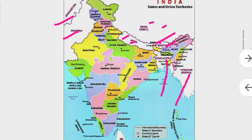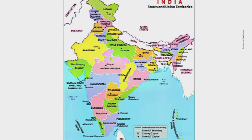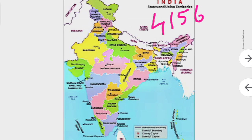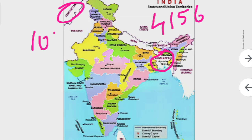India shares its longest border with Bangladesh - 4,156 kilometers. At the same time, India shares its shortest border with Afghanistan - only 106 kilometers.